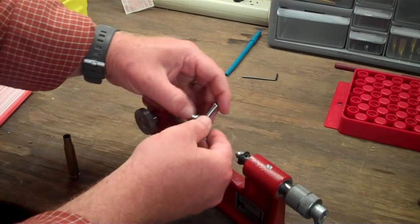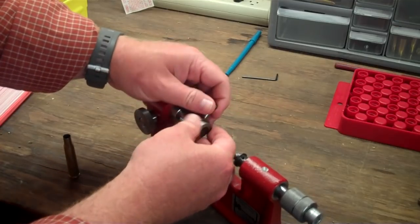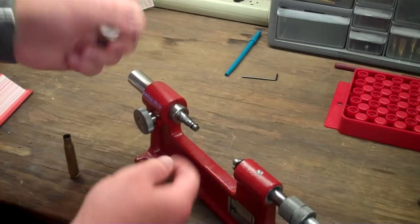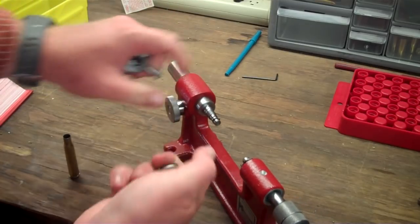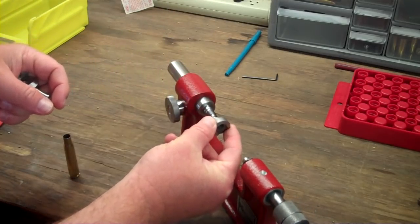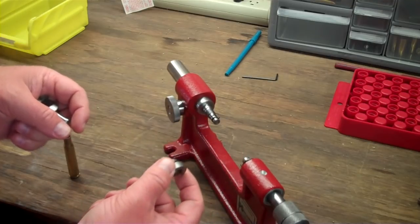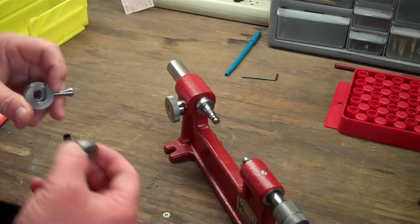You have to use the Hornady one because if I loosen this up and take it out, the hole, there's a hole here. This hole right here, or this piece right here, has to fit the hole of the case. The RCBS one, for example, is a little bit smaller and it just will not fit.